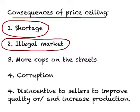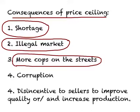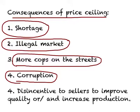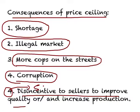When you have a shortage, you will have an illegal market. You can buy this product outside the system — in a way, you will do it illegally. To enforce a price ceiling set by the government, it is going to put more cops on the street. When the government puts more cops on the street to enforce the price ceiling, it is entirely possible that we may be able to bribe the cops to get what we want, so corruption increases. And when the price is so low, there is a disincentive for sellers to improve quality or increase production. These are some important consequences of price ceiling.